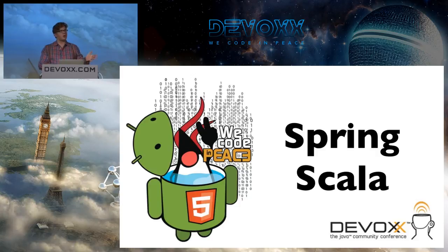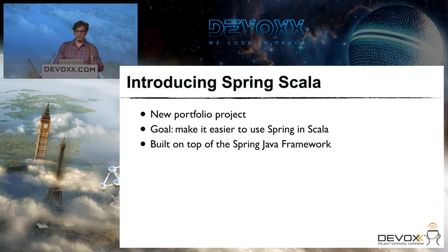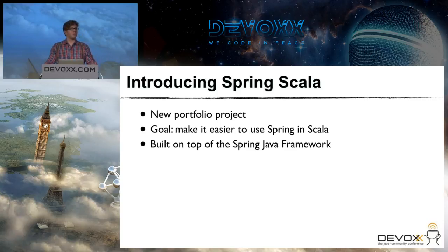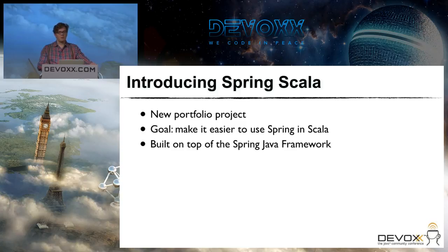Now we get to the meat and potatoes of this talk: Spring Scala. What is Spring Scala? It's a new project — I announced it last week at our own conference in Washington DC. The goal is very simple: just to make it easier to use Spring in Scala. Because Scala runs on the JVM and Spring also runs on the JVM and is written in Java, we just provide some Scala layers on top of the Java framework to make it easier to use from Scala.